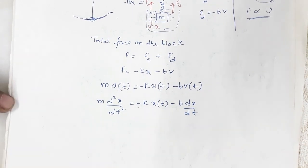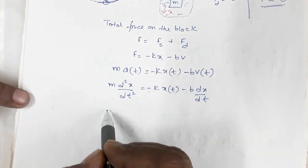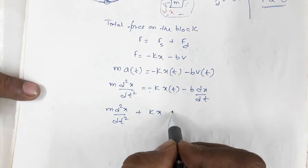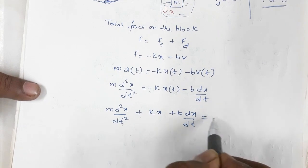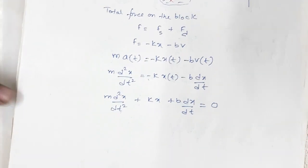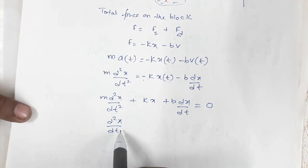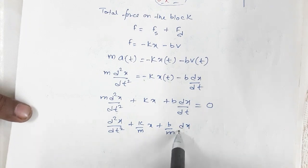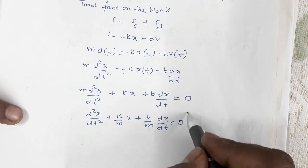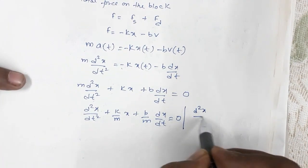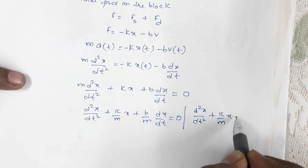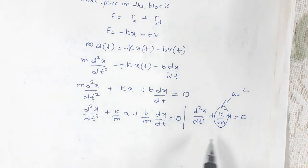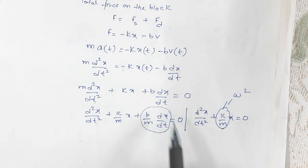Rearranging, we get: m·d²x/dt² + kx + b·dx/dt = 0, or equivalently: d²x/dt² + (k/m)x + (b/m)·dx/dt = 0. For undamped oscillation, the equation was d²x/dt² + (k/m)x = 0, where k/m = ω². So the extra term (b/m)·dx/dt is the additional term we get because of damping. This is the differential equation for damped oscillation.